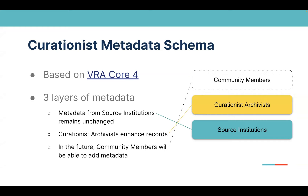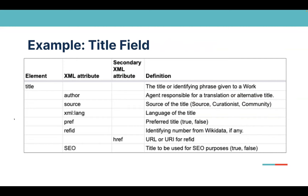This is an example of how we designed the metadata schema — we're really taking advantage of VRA's use of attributes so we can have many different qualities or facets to each element. For the title field, for example, you can have an author showing who contributed that title, where it came from originally — whether from the source institution, a Curationist archivist, or a community member — the language it's in, whether it's preferred, a reference ID to WikiData, and an SEO title that a Curationist archivist might provide to make the page easier to find through search engines.